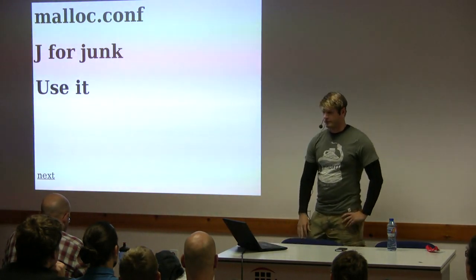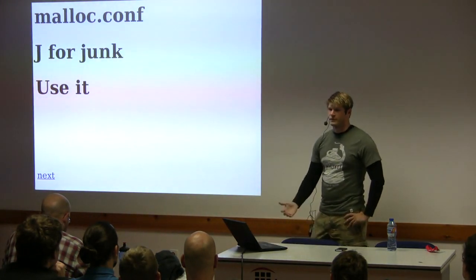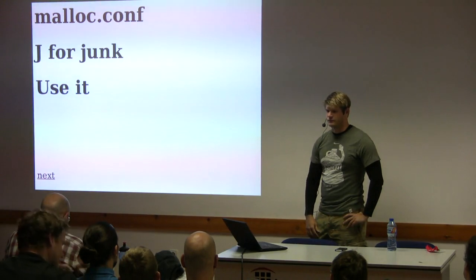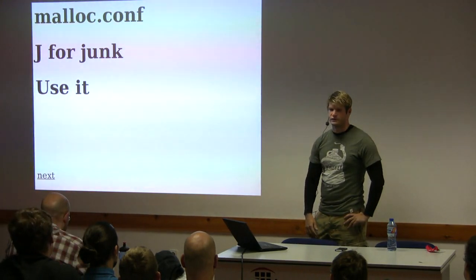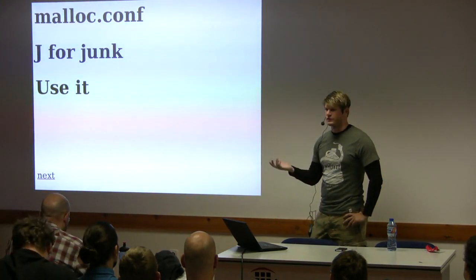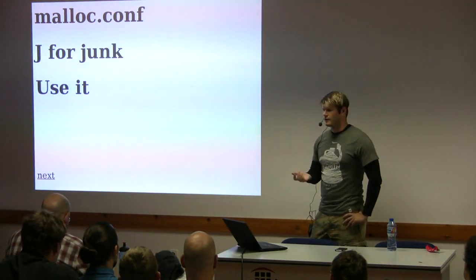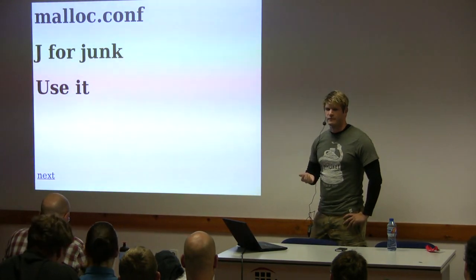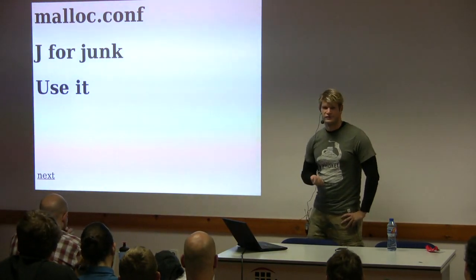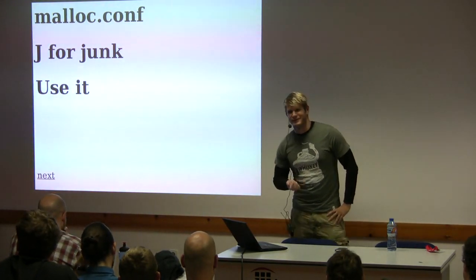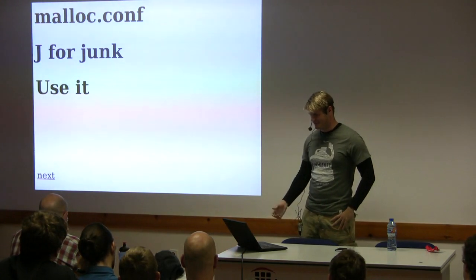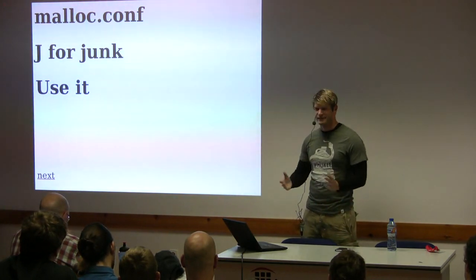We turned this on by default because for as much as the user base has run with J turned on, you can always find more bugs by conscripting more testers. If you don't want to volunteer, you're going to be volunteered. And this immediately triggered a bug in the Postgres Ruby gem where it was using memory after it had been freed — nobody had happened to run this particular code with malloc J turned on before, and as soon as we switched to junk by default, the bug came out.